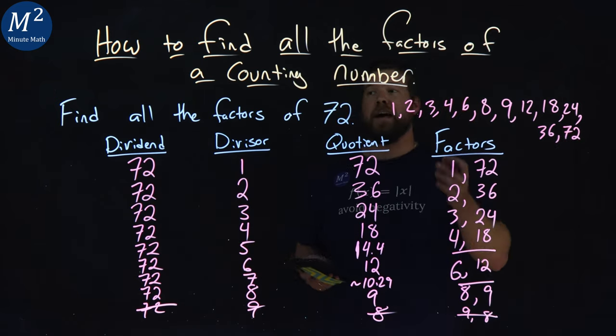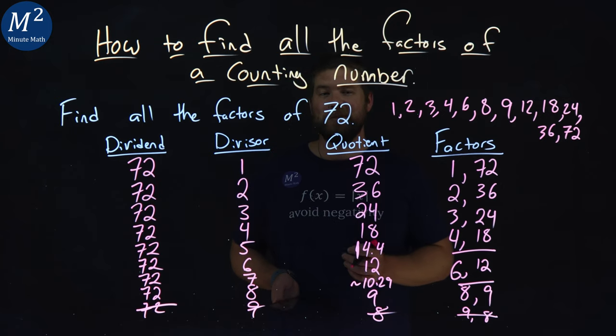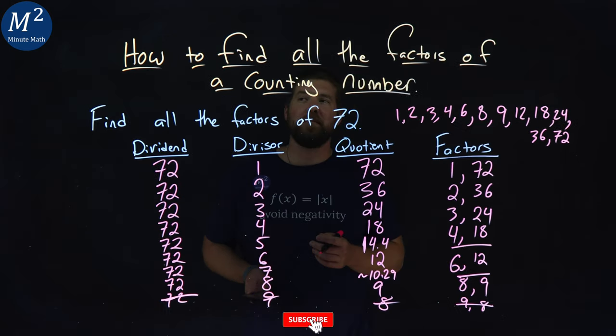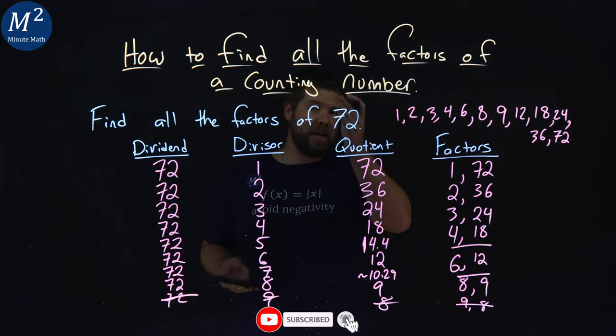And there we have it. We have all the factors of 72. I hope you learned something here on how to find all the factors of a counting number.